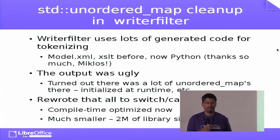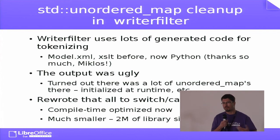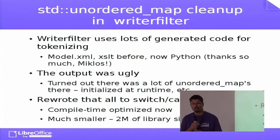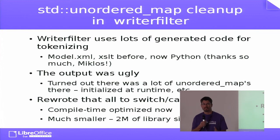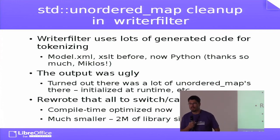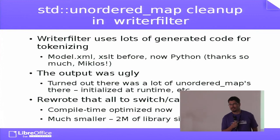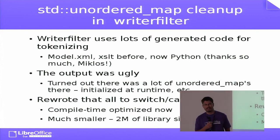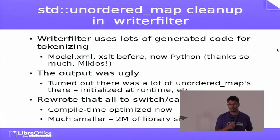As you might know, writer filter works in a way where we have a description of what tokens are supposed to appear when parsing our XML, and we have this description in model XML. There used to be code in XSLT that produced code that was later compiled, and this compiled code was actually recognizing all these things during XML parsing. When it was in XSLT, nobody had the courage to actually touch it, but then Miklos decided to change it to Python.